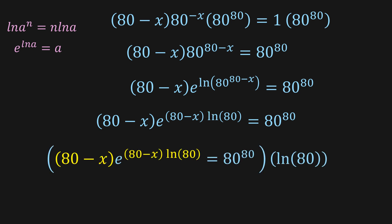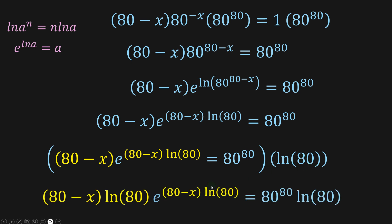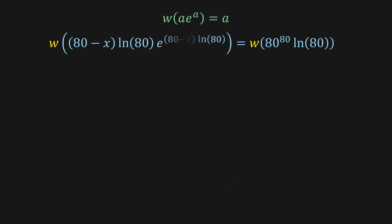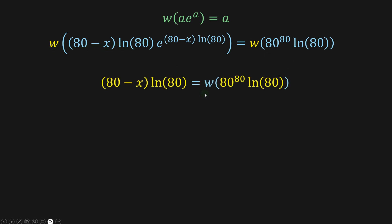Applying the property we get this expression here. But it's still not in the right form because we have ln here but not multiplying the full expression. That's why we multiply both sides by ln(80). Now this expression matches the Lambert W form, so our 'a' is (80 - x)·ln(80).